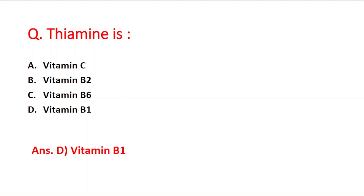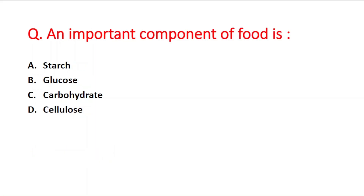Next question: an important component of food is — option A starch, B glucose, C carbohydrate, D cellulose. The right answer is option C — carbohydrate.